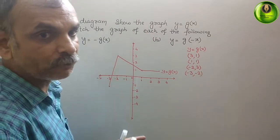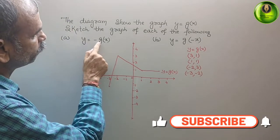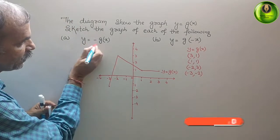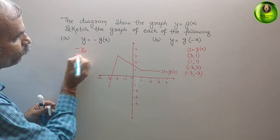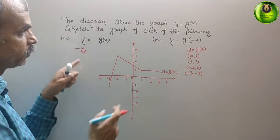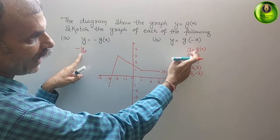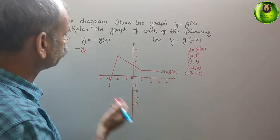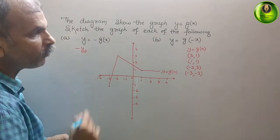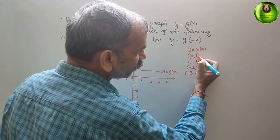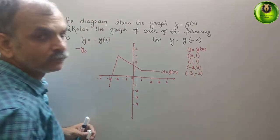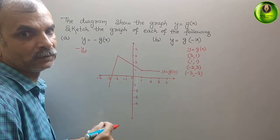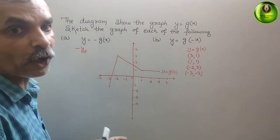Now, what they have told is y = -g(x). That means it is nothing but your minus y. If you compare and you are writing minus on the right side, you have to write minus y on the left side as well — minus y = -g(x), which is true. So, instead of positive y-values, we have to put the opposite, that means minus.